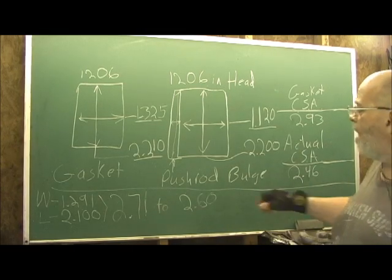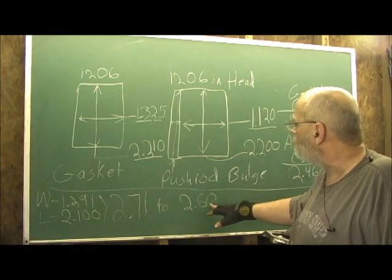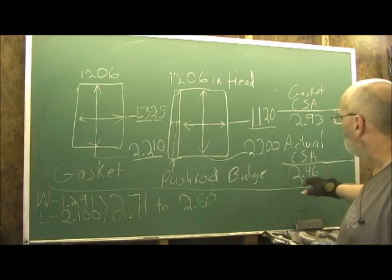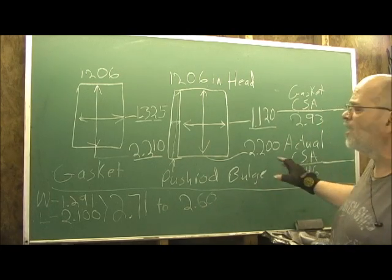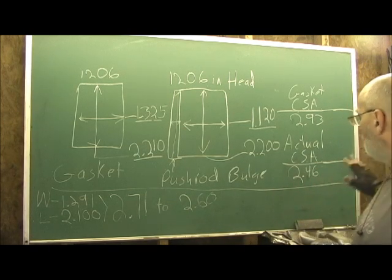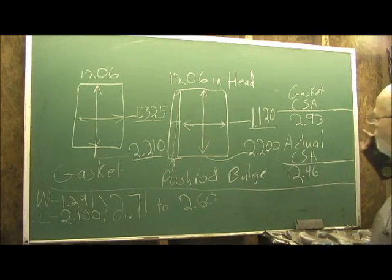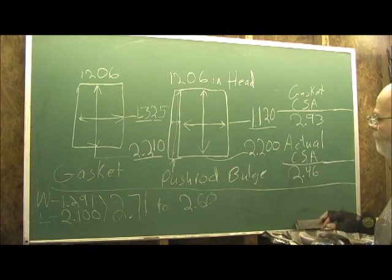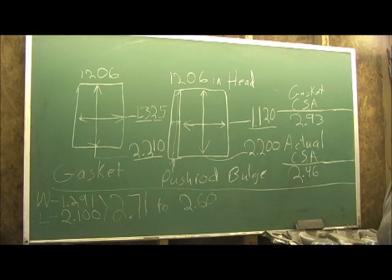So that means that our intake manifold, even on the curvature, the smallest point, look at that, it's about a tenth and a half bigger, just a little bit. But it's bigger enough that, guess what, the manifold is not going to restrict the head, and the manifold will feed the head 100%.